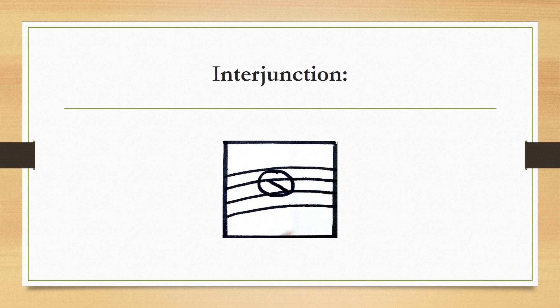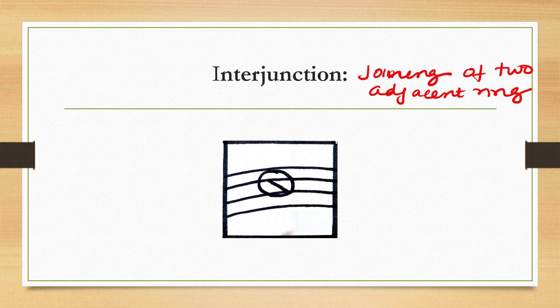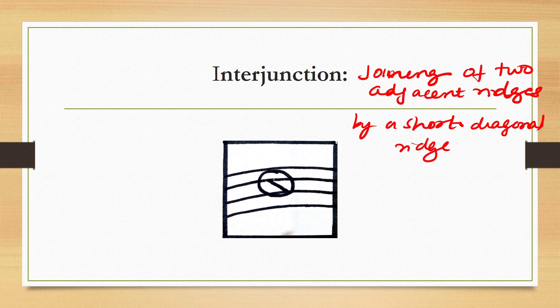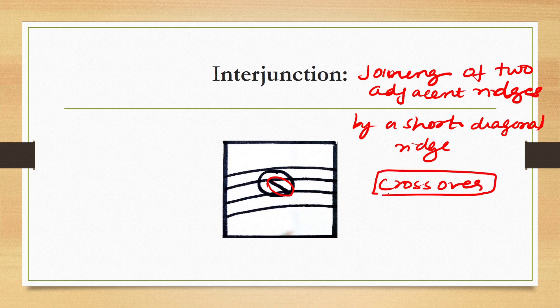Next is interjunction — the joining of two adjacent ridges by a short diagonal ridge. It is also known as crossover. Two parallel ridges are connected by a short ridge running diagonally between them.